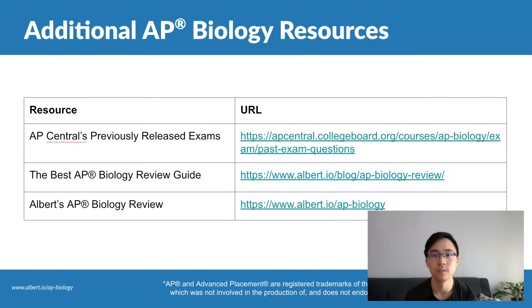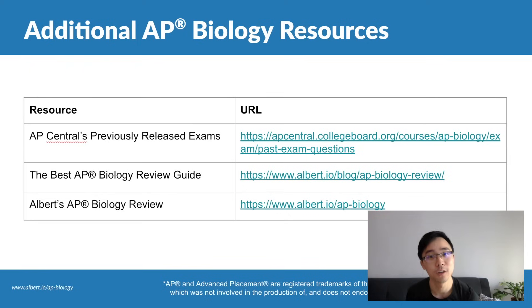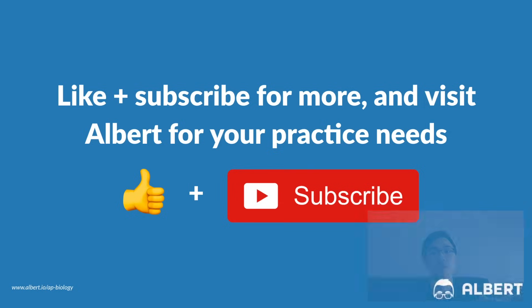Those are our five tips for writing effective AP Biology FRQs. Here are three more resources: first, the College Board's past released exams — the best way to get practice and exposure to rubrics and questions. Second, our best review guide for AP Biology, a free resource on our blog to use as a study guide. Third, Albert's review course, which provides hundreds of practice questions including FRQs with exemplars showing how students could have scored full points. Make sure you hit subscribe because our next video will go over 25 tips for tackling the AP Biology FRQ section.